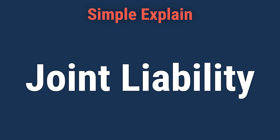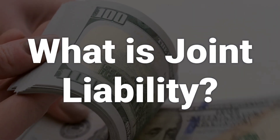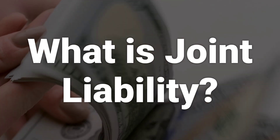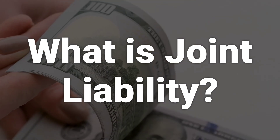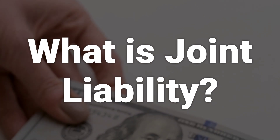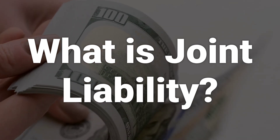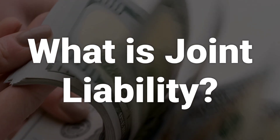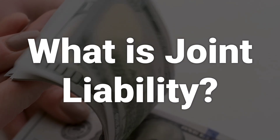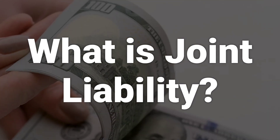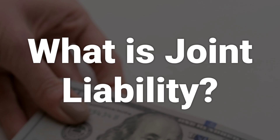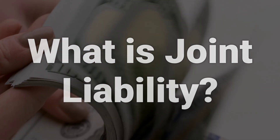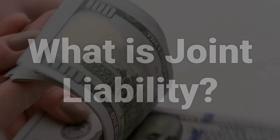Today, we will talk about joint liability. Joint liability refers to the obligation of two or more partners to pay back a debt or be responsible for satisfying a liability. This means that if one partner is unable to fulfill their obligations, the other partners are still legally responsible for the debt or liability. In simple terms, it's when two or more people are held accountable for the same thing.